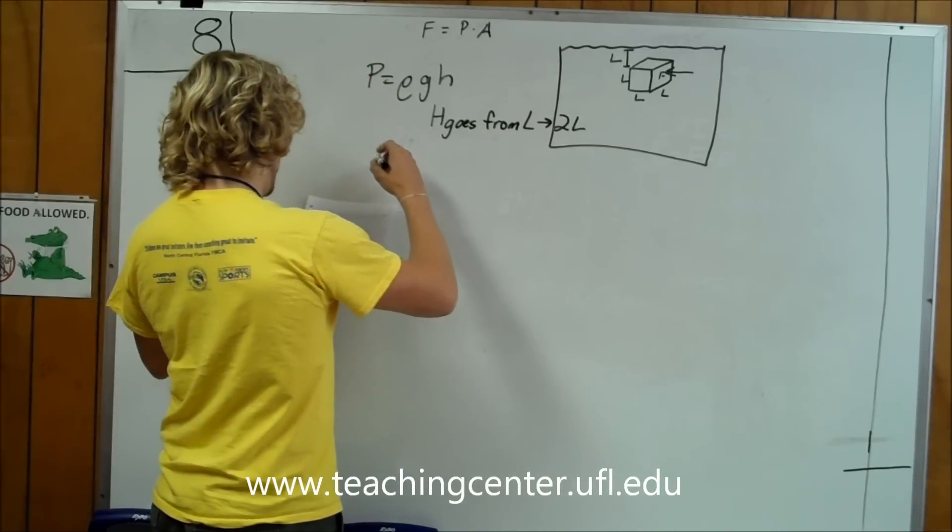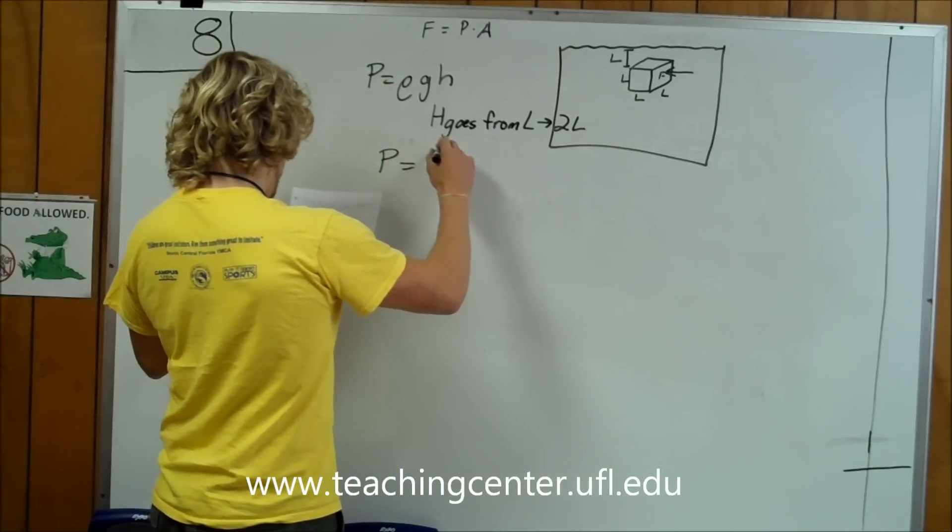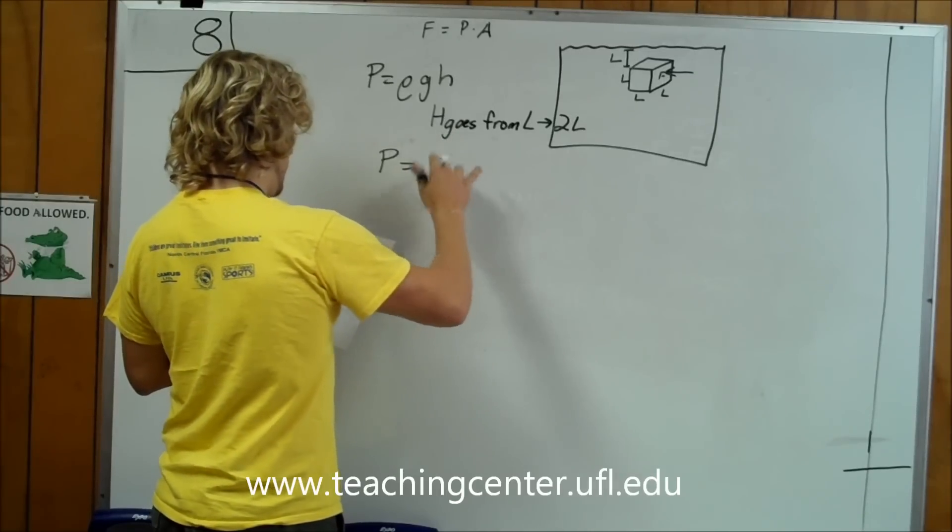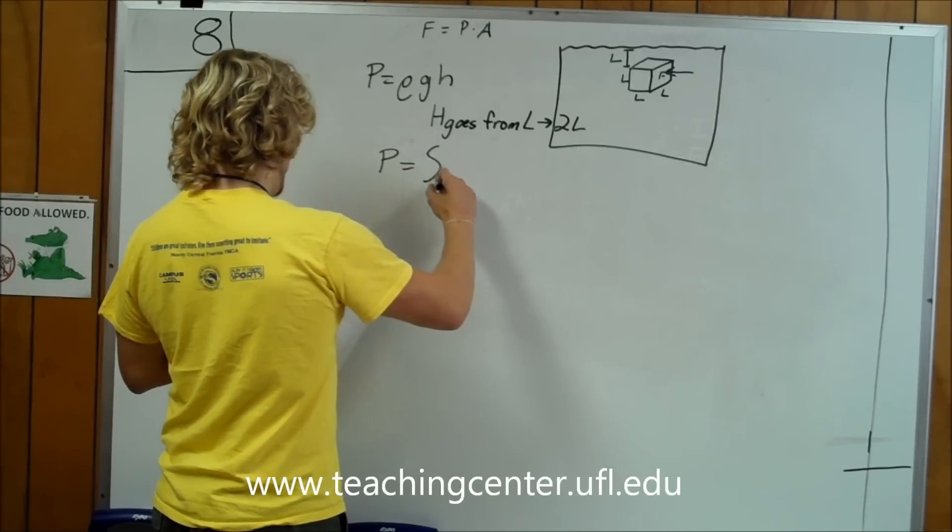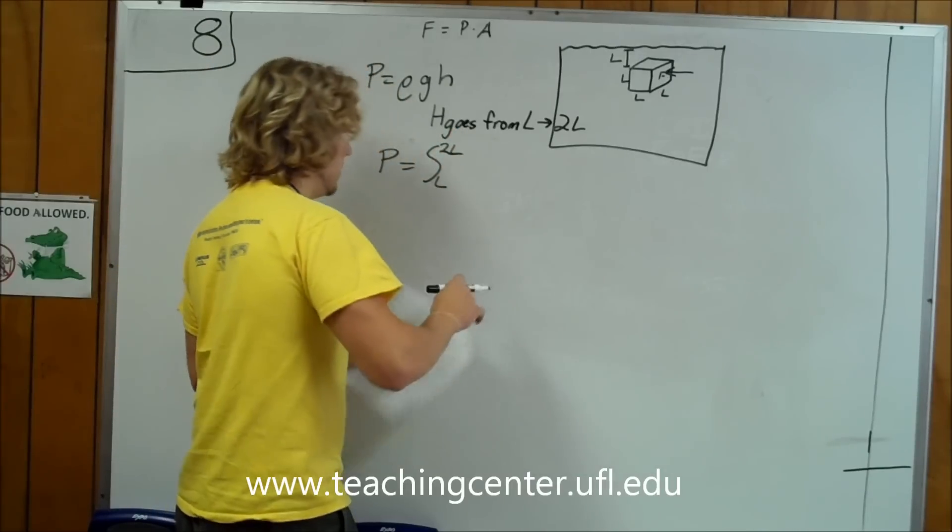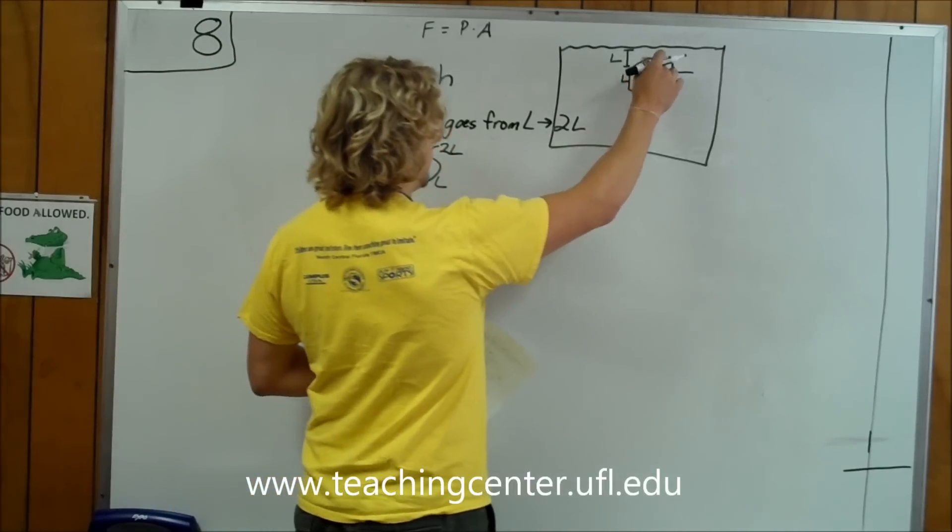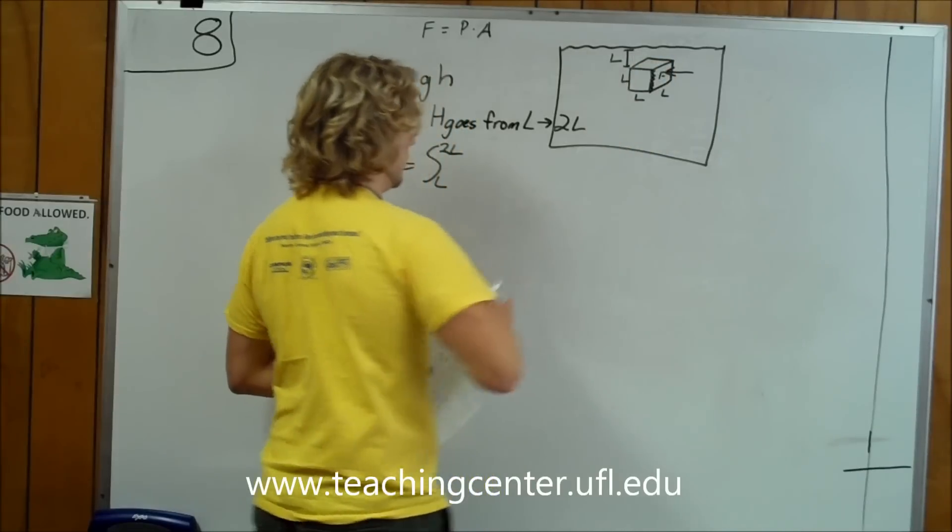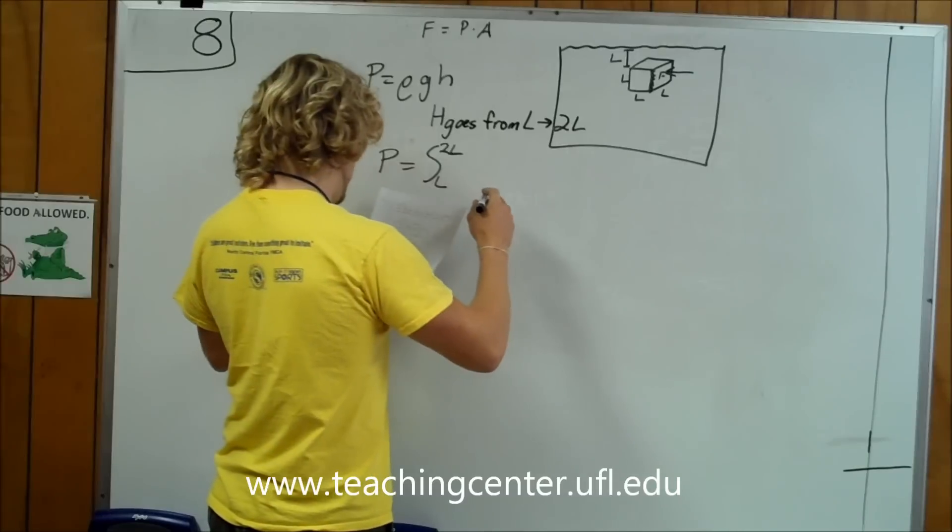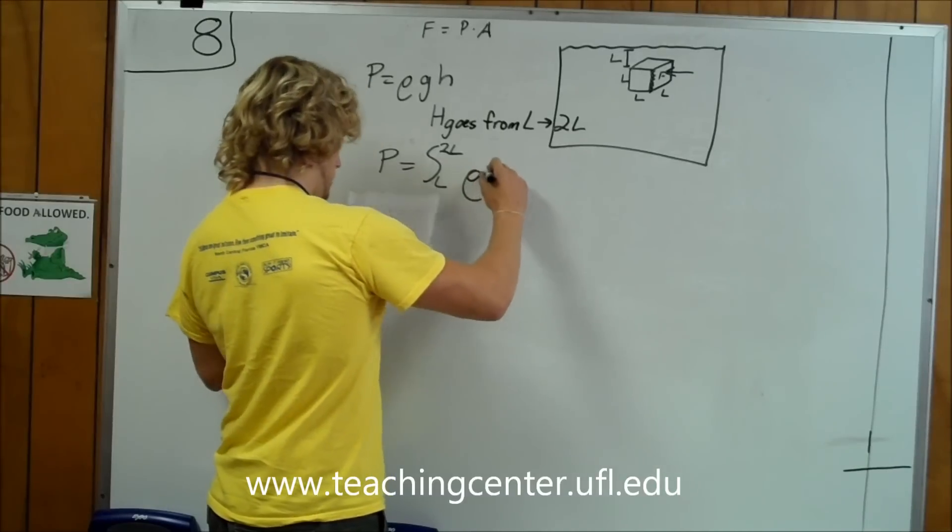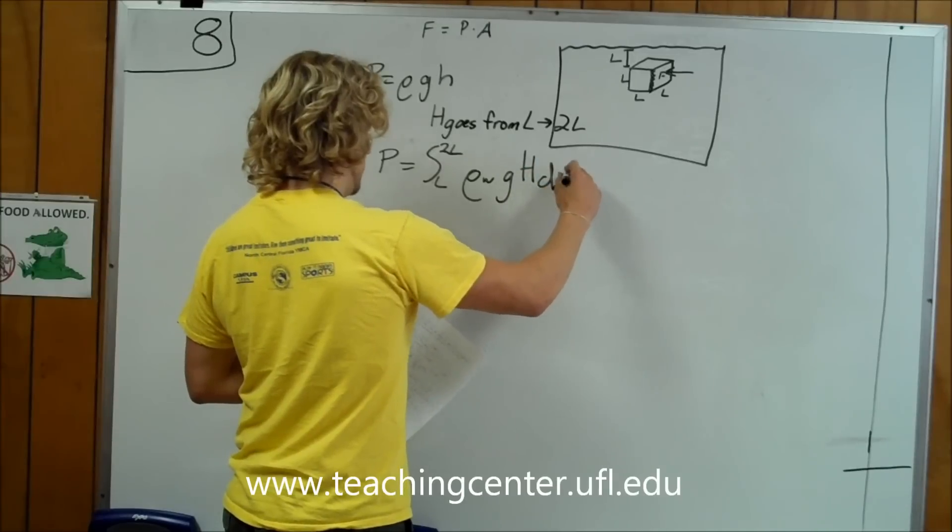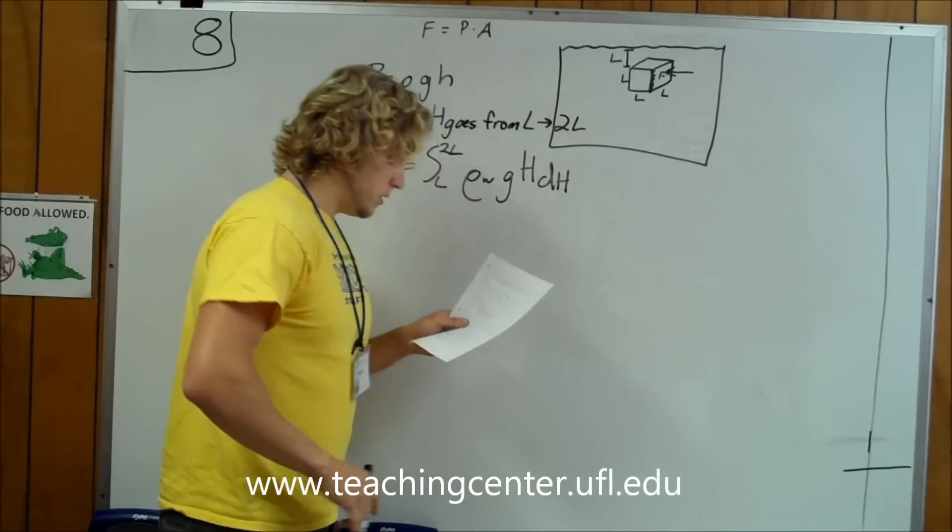What we're going to have to do is start out with P is equal to the integral from L to 2L. We're finding the pressure all along the vertical edge, times rho W G H D H.